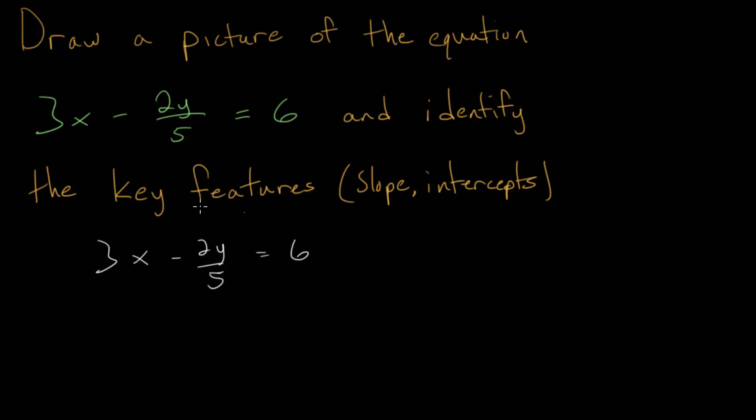Right away, we can get rid of this fraction. We can multiply both sides of the equation by 5 to cancel out this denominator here, since 5 divided by 5 is just 1. When we distribute on the left-hand side, we get 15x and 5 multiplied by this fraction. The 5 in the numerator and denominator will cancel, and we will just get minus 2y, and this is all equal to 30.